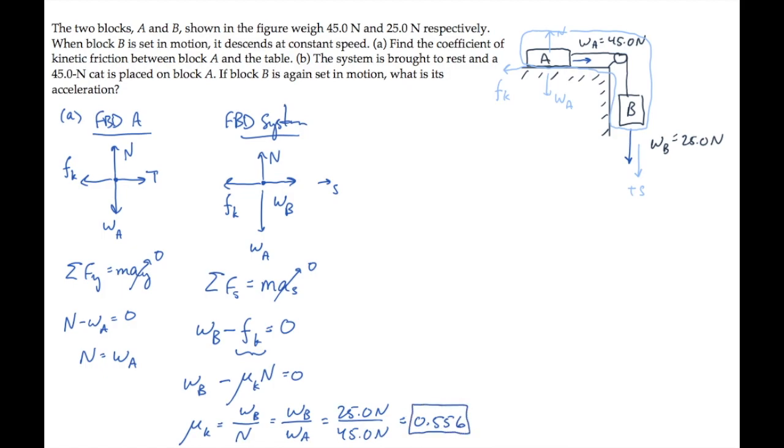Part B asks us to find the system's acceleration if a cat is placed on top of block A and the system is set in motion again. We're told that the cat's weight equals the weight of block A. Let me move our result for the coefficient of kinetic friction up here, so that we can redo this part and solve it for part B.